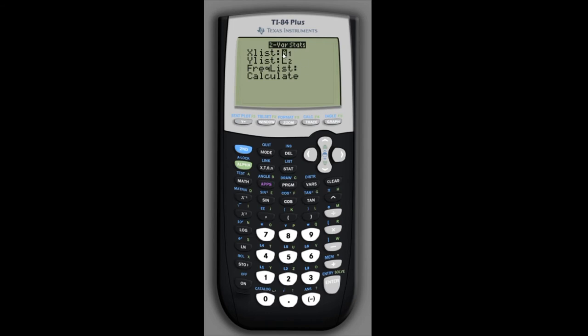We'll leave everything as it is. The x list is list one, the y list is list two. We entered the sizes under list one and the prices under list two, so we can go to calculate, and it will give us the averages and standard deviation for each, as well as some extra information.